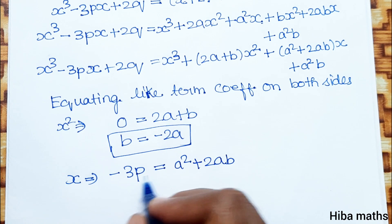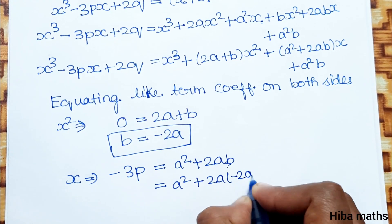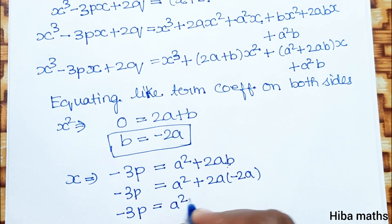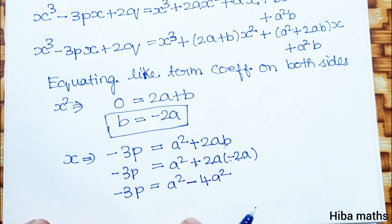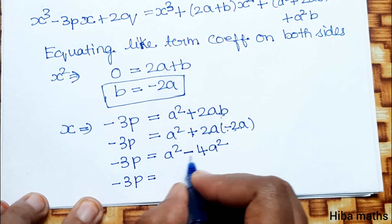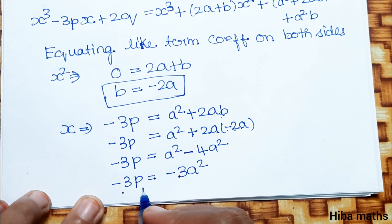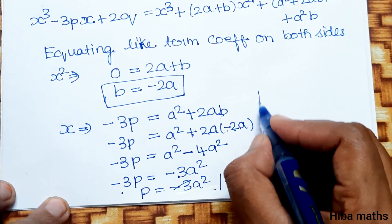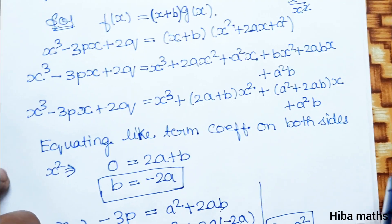Now comparing coefficients of x: a square plus 2a into minus 2a minus 3p equals a square minus 4a square. So minus 3p equals minus 3a square. Dividing both sides by minus 3, we get p equals a square.